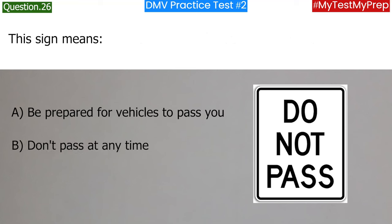You are approaching an intersection. The traffic signal light is flashing red. What should you do? a. Wait for the green light before entering; b. Stop before entering, then proceed when safe; c. Slow down but allow cross traffic to go first. Answer: a. Wait for the green light before entering.